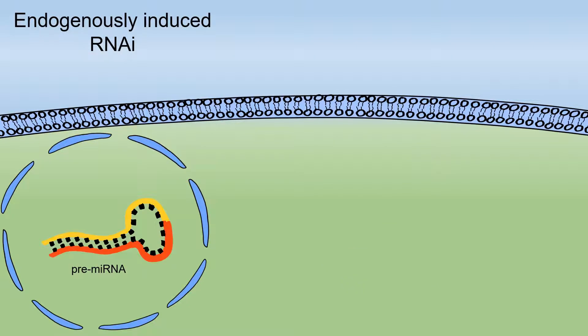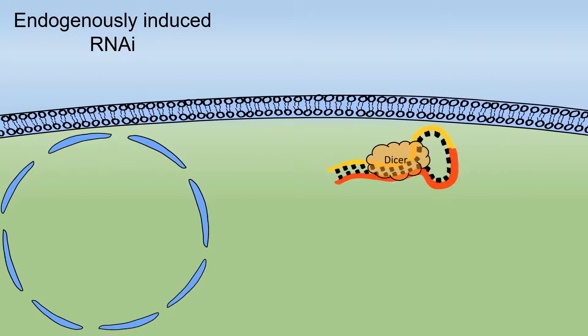Endogenously-occurring double-stranded RNA is expressed in the hairpin-loop structure called pre-micro-RNA in the cell nucleus. When introduced to the cytoplasm, this molecule binds to the Dicer complex and then undergoes a similar process to that of the exogenous pathway.